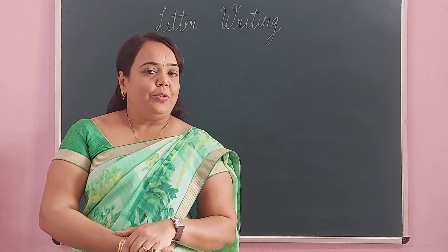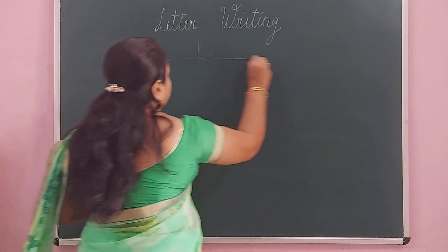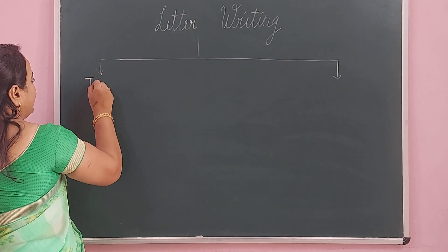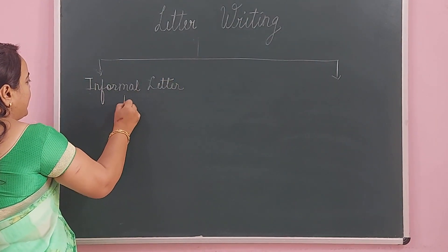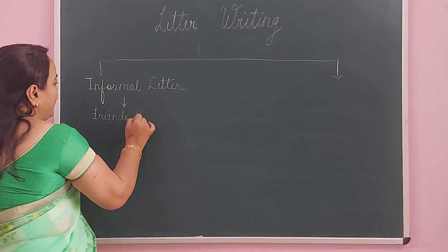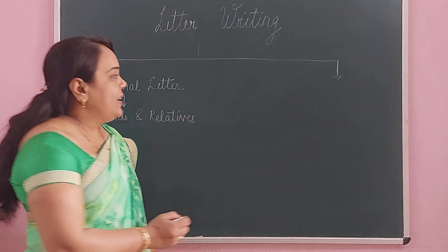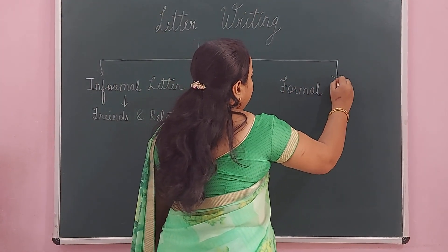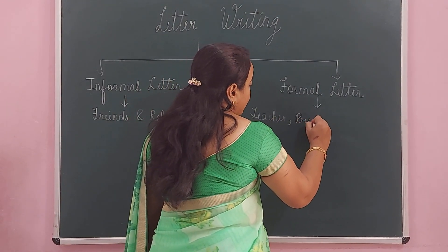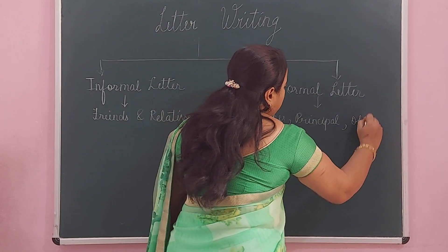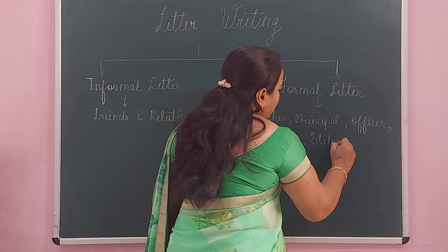There are two types of letters: informal letter and formal letter. Informal letters are the ones which you write to your friends and relatives, or the people you know well. Formal letters you write to people like a teacher, principal, officers, editor of a newspaper, manager, etc. — people who are on a certain post.